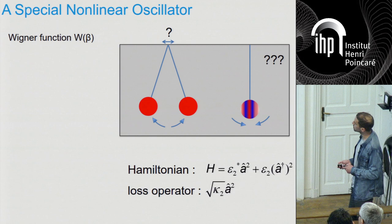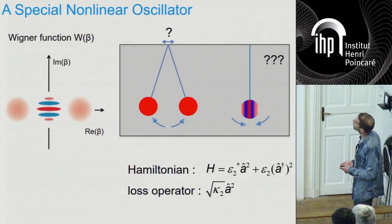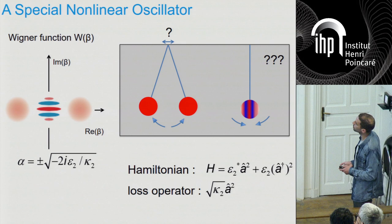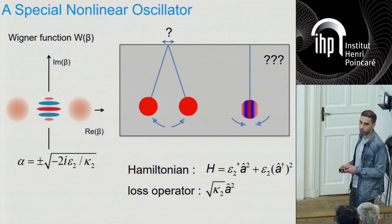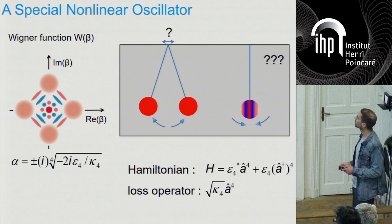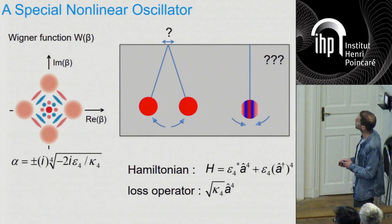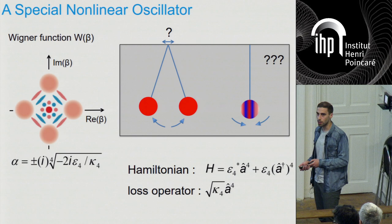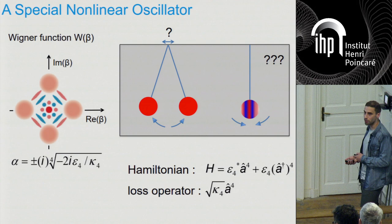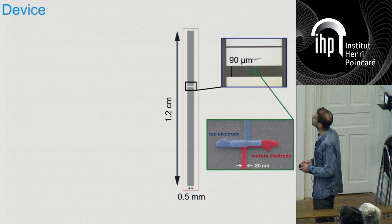The question we're asking is: is there a way I can drive a system such that its steady state is not a single steady state but a whole manifold of steady states? What you'd need is some special drive and special dissipation such that not only this state is a steady state and this one, but any superposition of the two is also a steady state. It turns out this does exist: if you have a Hamiltonian that is quadratic in A and A dagger — A squared plus A dagger squared, known in quantum optics as squeezing — and a loss operator where you annihilate photons in pairs at rate kappa_2, then any superposition of the two cat states will be a steady state.